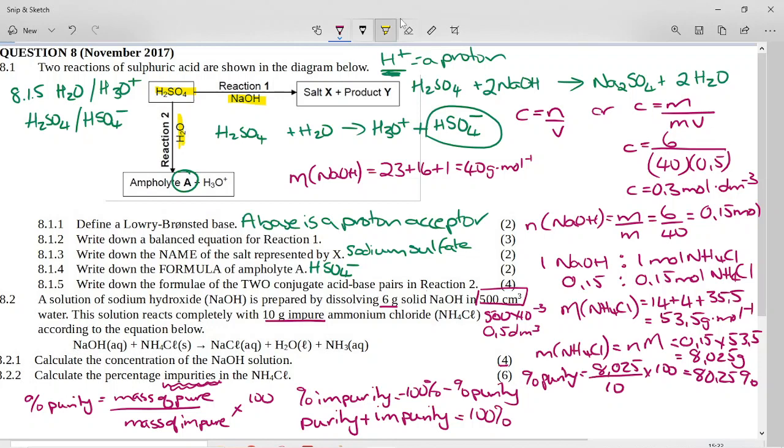So if we want the percentage impurity, we have to say 100% is the full sample purity plus impurity equals 100%. So if we say 100% minus 80.25%, all we are left with is 19.75% impurity.